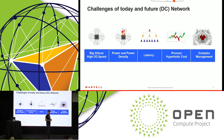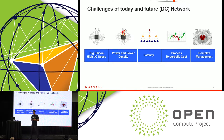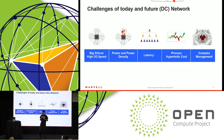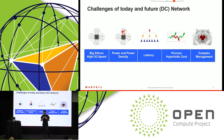There are many challenges in today's and future data center networks. I'll highlight some of them, and as the presentation goes on, I'll show you how we actually solve them. The first one is that the silicon becomes bigger and the I/O throughput becomes higher. That poses a problem for people that want to use 10 gig interfaces, where the silicon only has 25, and the next generation will have 50 gig IOs. So how do I connect to my 10 gig NICs? That's a problem.